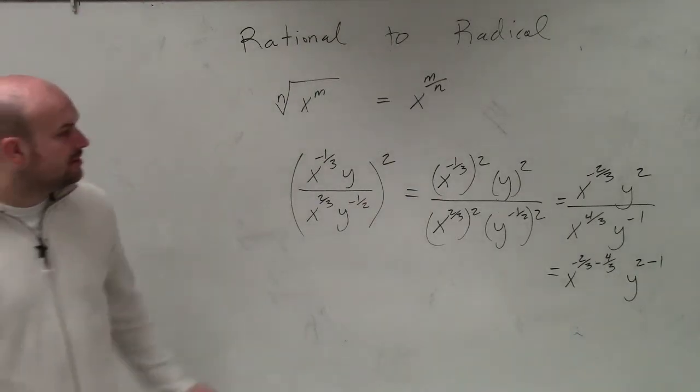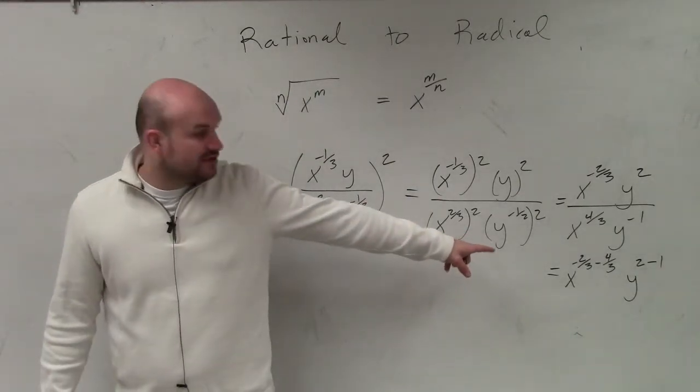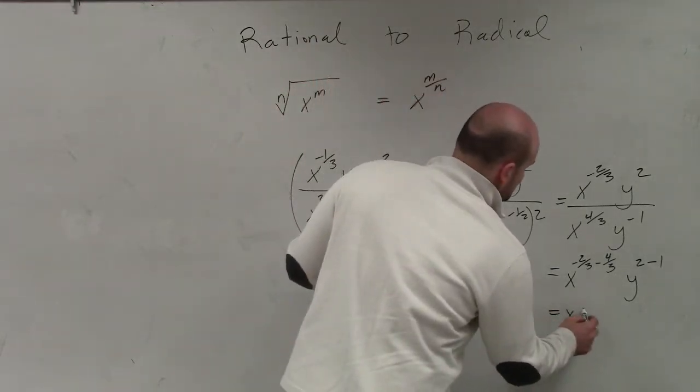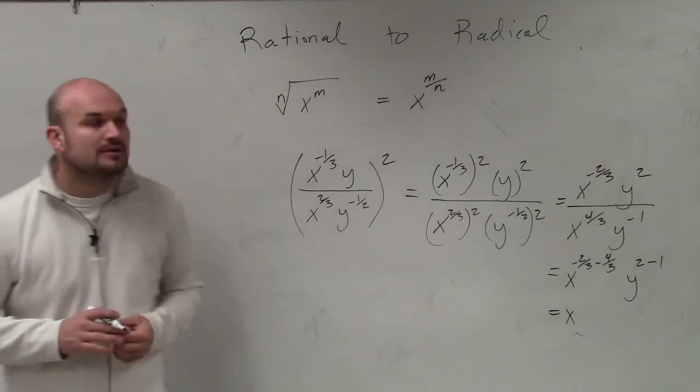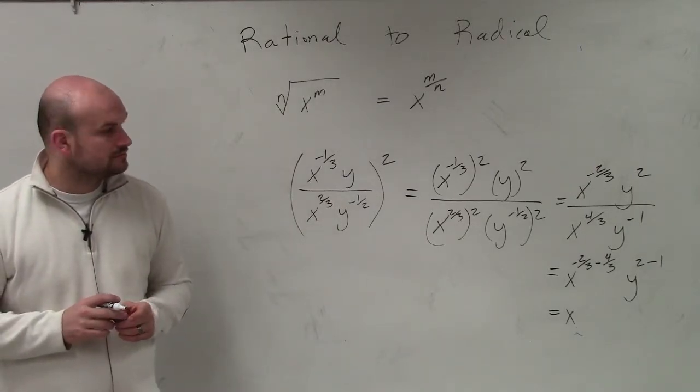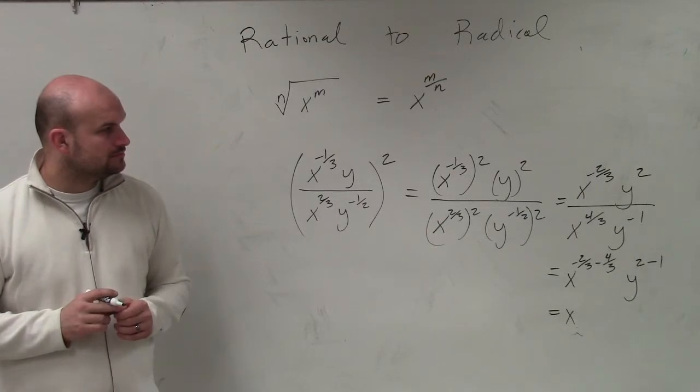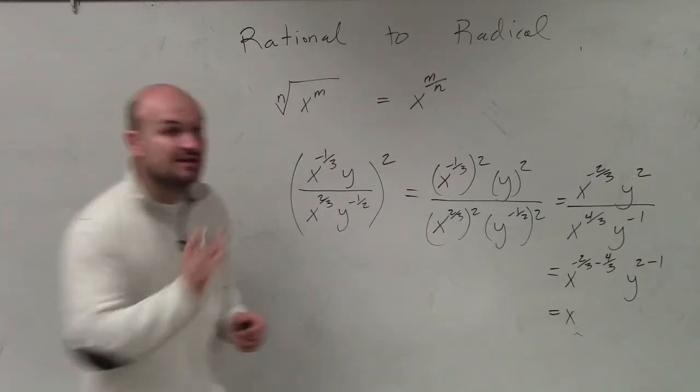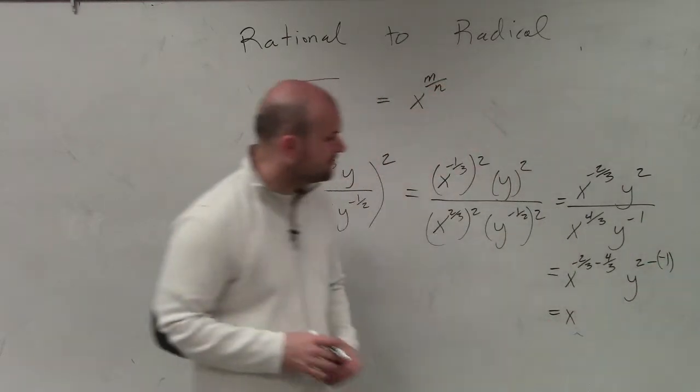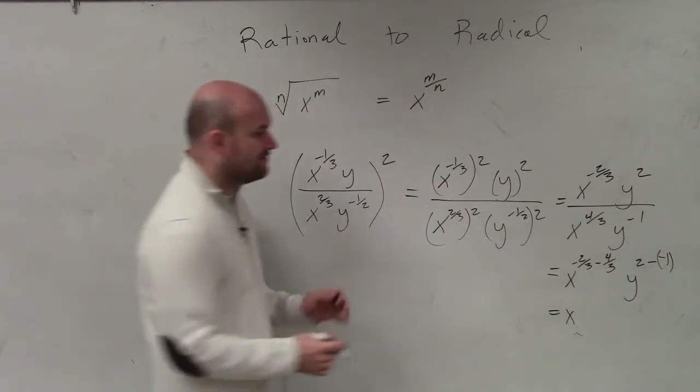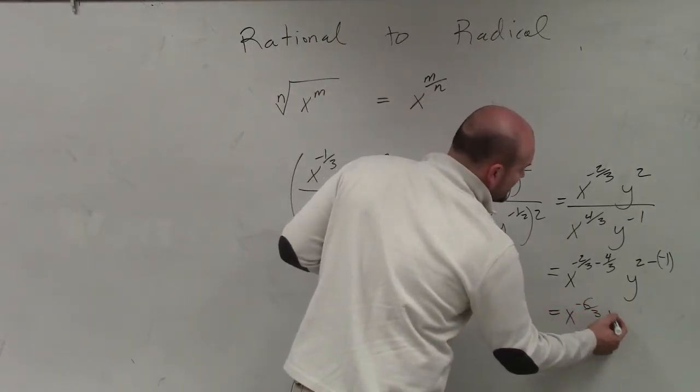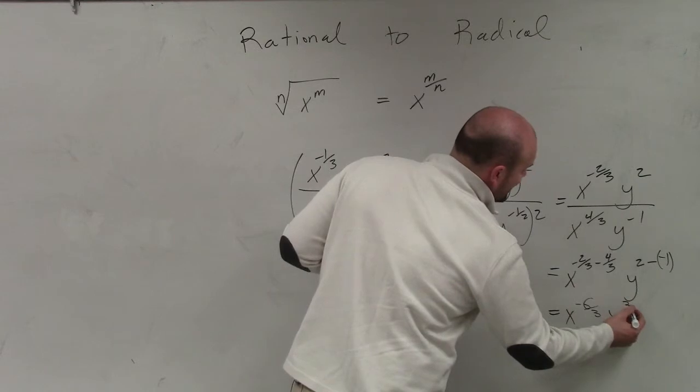All right? So if we have negative 2 thirds minus 4 thirds, that's going to become x... What? Wouldn't it be 2 minus negative 1? Yeah. Oh yes, thank you. Very good. Thank you. 2 minus a negative 1. Very good. Thank you. Very common mistake. So therefore, this becomes x to the negative 6 thirds times y to the positive thirds.